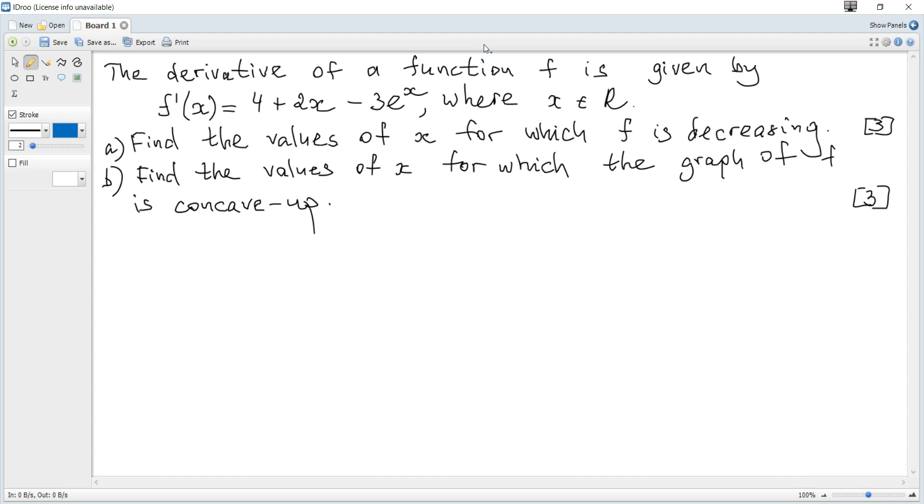The derivative of a function f is given. Question a finds the values of x for which f is decreasing. For a function to be decreasing, the derivative must be less than zero. So we consider the derivative less than zero, which becomes 4 + 2x - 3e^x < 0.